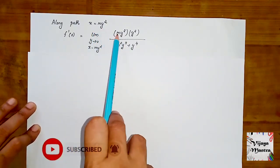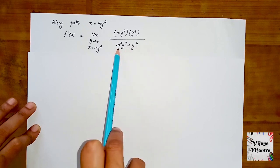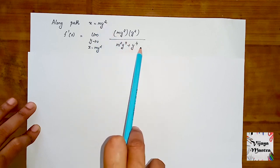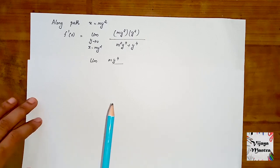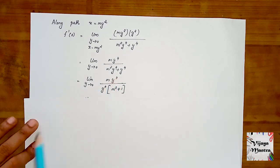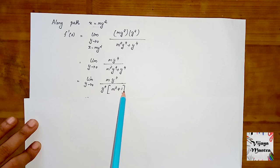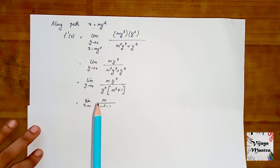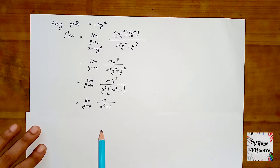Along the path x = my², substitute: the numerator becomes my⁴, denominator m²y⁴ + y². Cancel y² to get my² / (m²y² + 1). As y → 0, we get m / (m² + 1). The limit value depends on m.